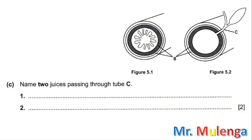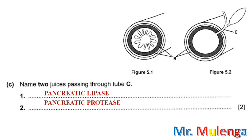The two enzymes to write as your answer are pancreatic lipase — a digestive enzyme that breaks down fats or lipids into fatty acids and glycerol — and pancreatic protease — a digestive enzyme that breaks down proteins into amino acids, with examples being trypsin and chymotrypsin. A third option is pancreatic amylase, which breaks down carbohydrates (starch) into simple sugars. The question only needed two, but three are given so you can choose.